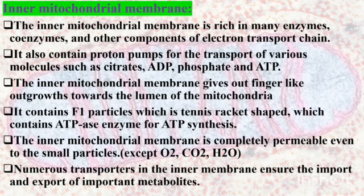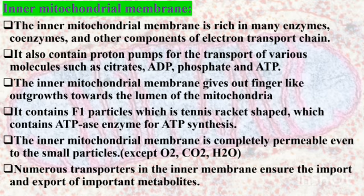Inner mitochondrial membrane: The inner mitochondrial membrane is rich in many enzymes, coenzymes, and other components of the electron transport chain. It also contains proton pumps for the transport of various molecules such as citrates, adenosine diphosphate, phosphate, and adenosine triphosphate. The inner mitochondrial membrane gives out finger-like outgrowths towards the lumen of the mitochondria. It contains F1 particles which are tennis racket-shaped and contain ATPase enzyme for ATP synthesis.